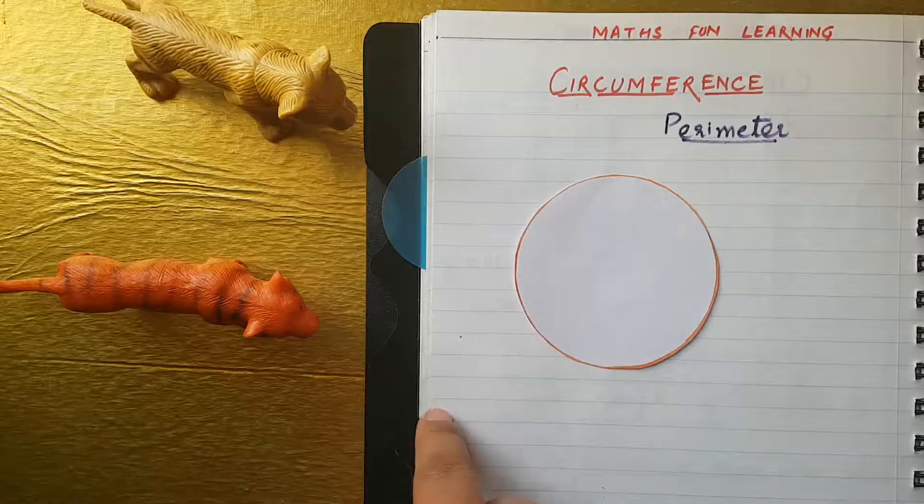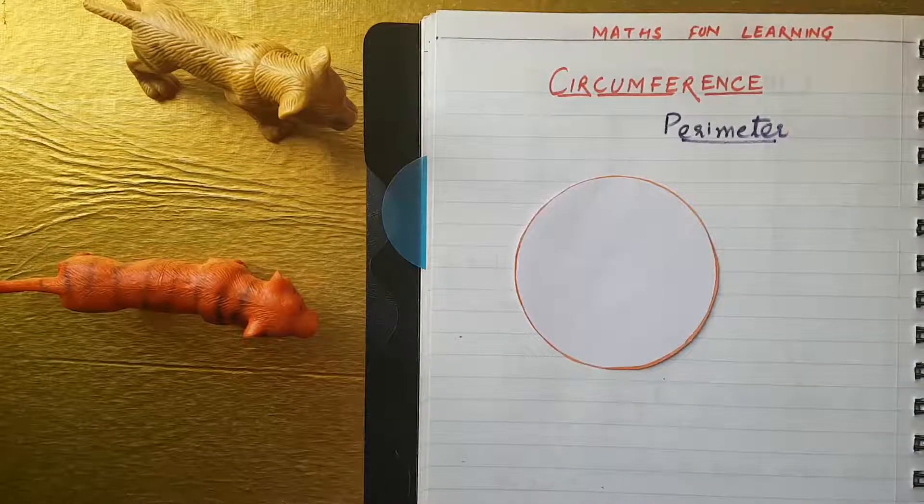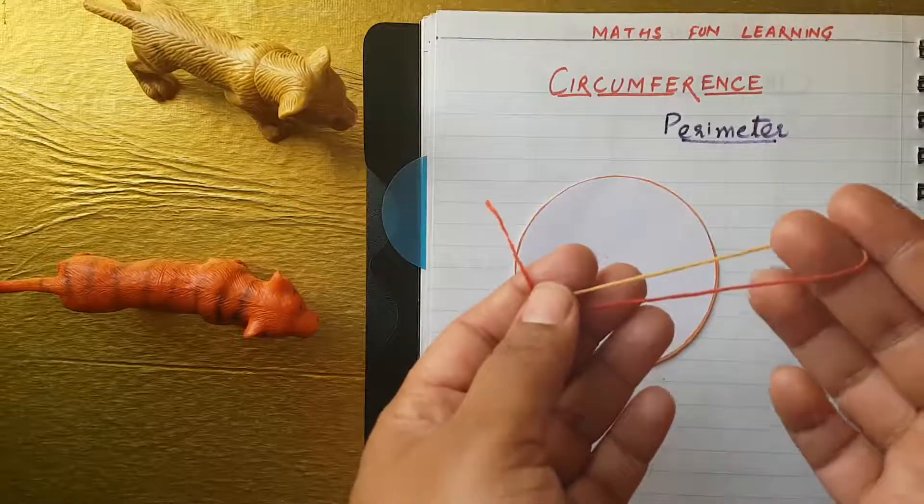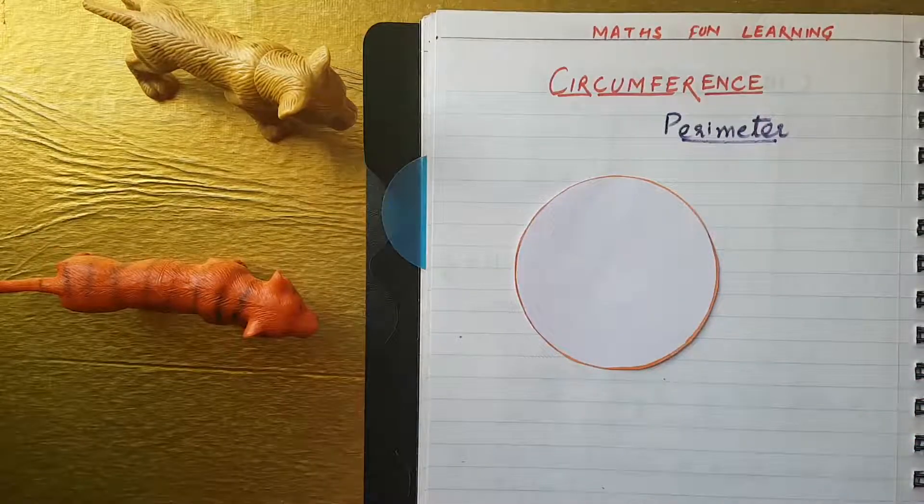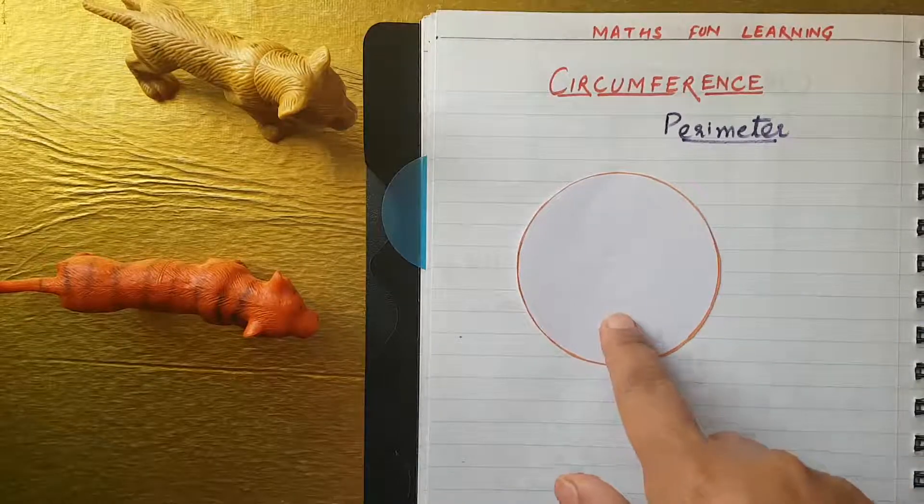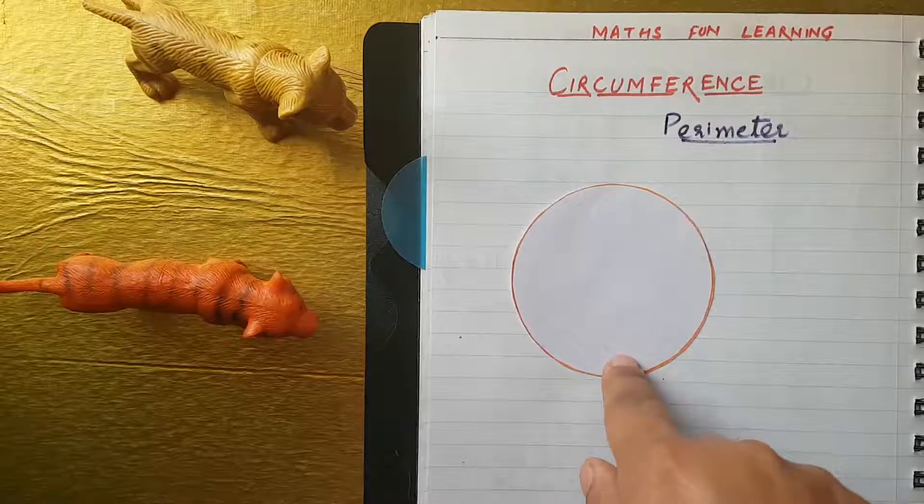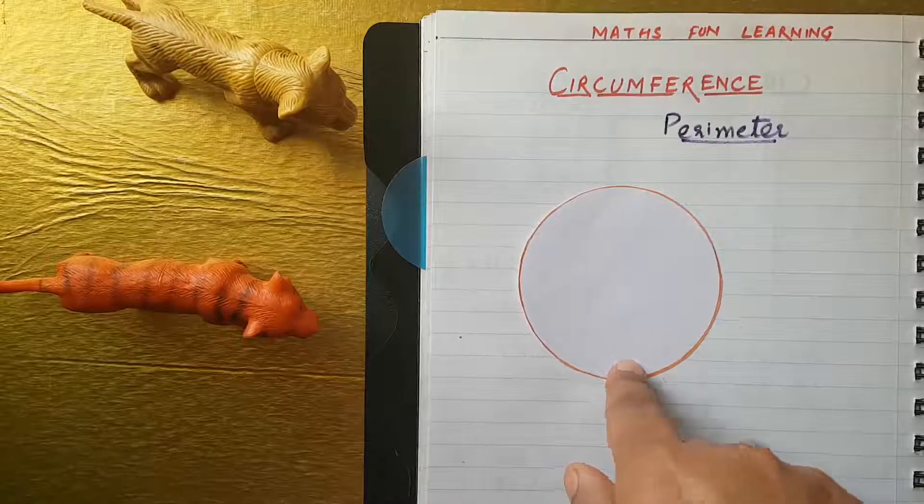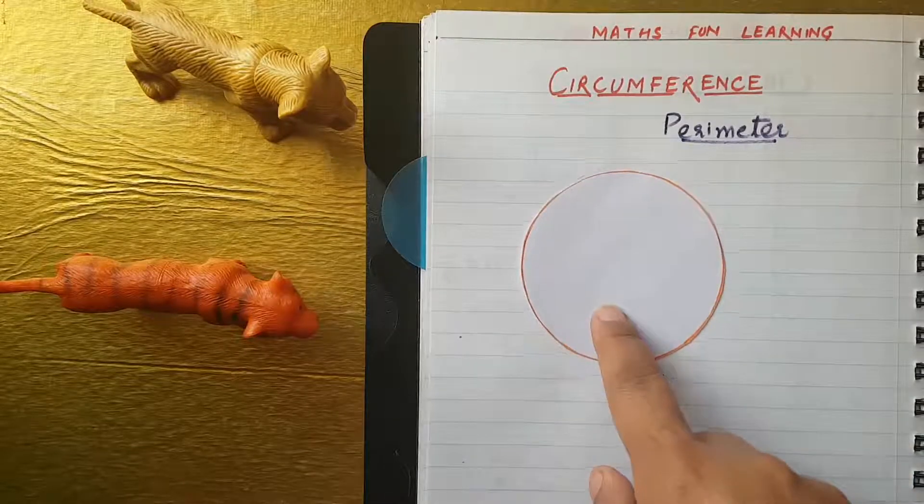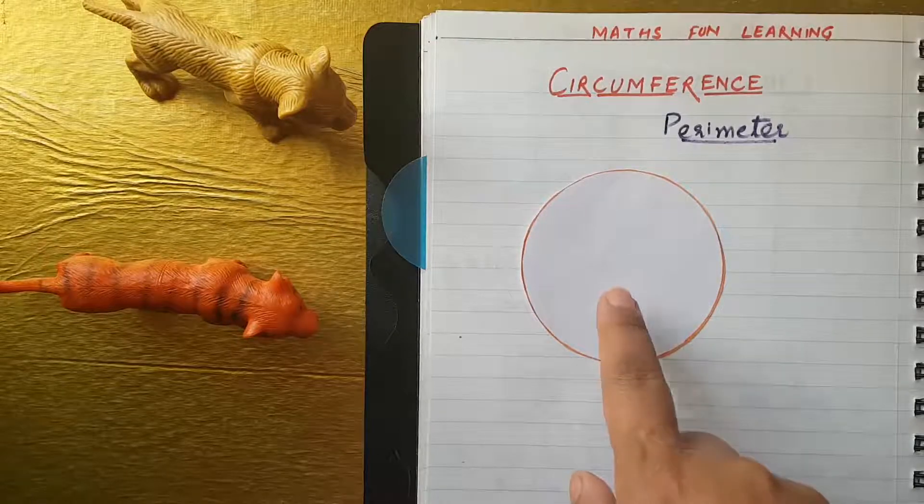But is it quite difficult method? Say, we have to always use this activity to find out the circumference of the circle. No. There is a formula to find the perimeter of the circle or any curve shape, figure. Let's see, what is the formula to find out the circumference of the circle?